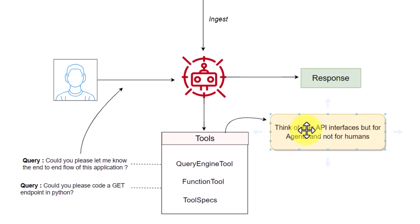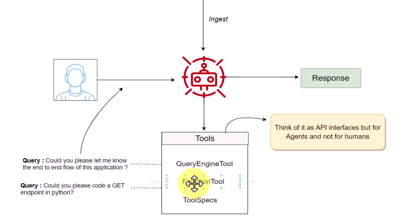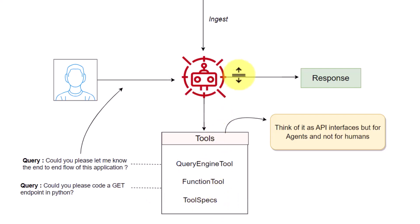What are these tools? You can consider them as an API interface. In an API interface, we build endpoints like GET and POST for different actions, but those endpoints are for humans. Similarly, tools are like an API, but for agents. In LlamaIndex we have a few kinds of tools: query engine tools, which help you query over your documents; function tools, where you can pass your custom function as a tool; and tool specs, which are already-built tools for things like Gmail or Slack.